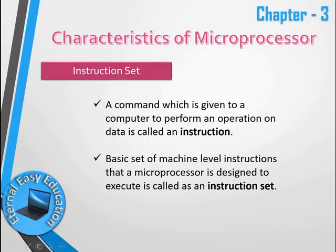The next characteristic is instruction set. A command given to your computer to perform an operation on data is called an instruction. The basic set of machine-level instructions that a microprocessor is designed to execute is called the instruction set. These are the types of commands we can give to the microprocessor.